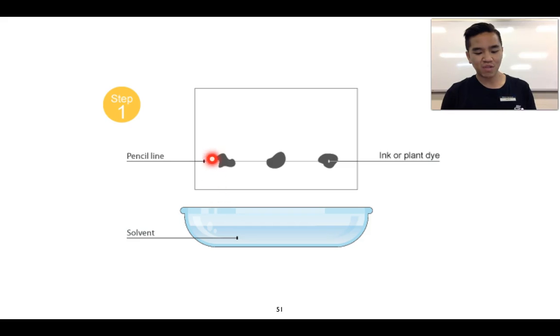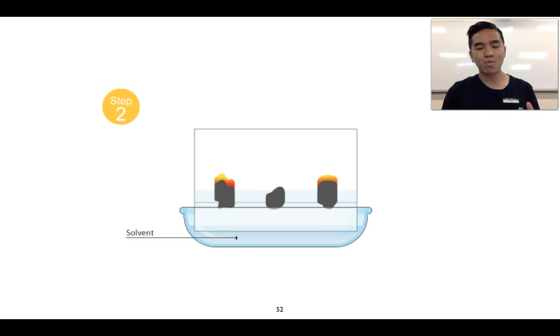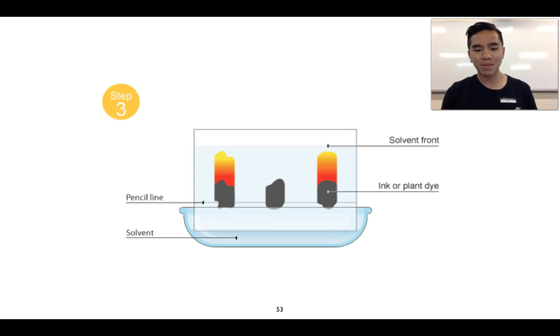As it does that, it will help carry some of those components of your mixtures as well, but it will do so to varying degrees. A lot of this has to do with the properties of those materials and how well they become attracted to the solvent, as well as how well they are attracted to what we call your stationary phase, which in this case is your chromatography paper. If we let the solvent travel up the paper, not quite to the top but very close, we'll mark a line called the solvent front. We don't want it to travel all the way up, otherwise the components will also travel all the way up and the components won't be separated.